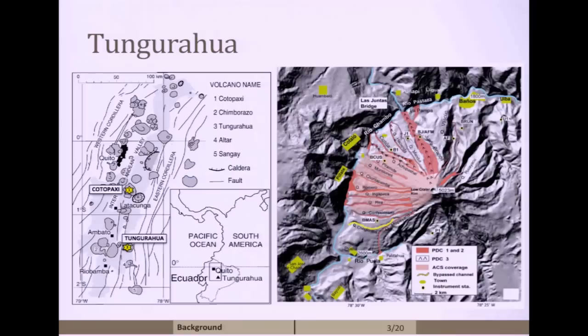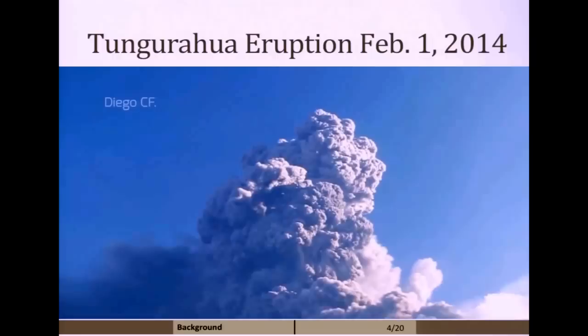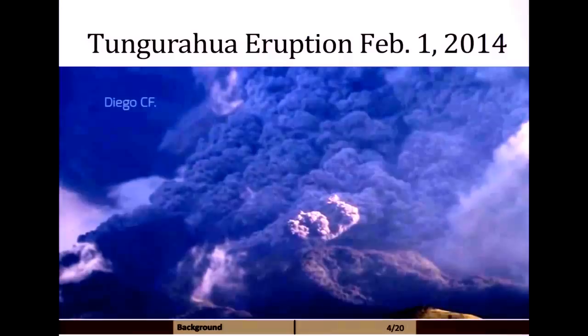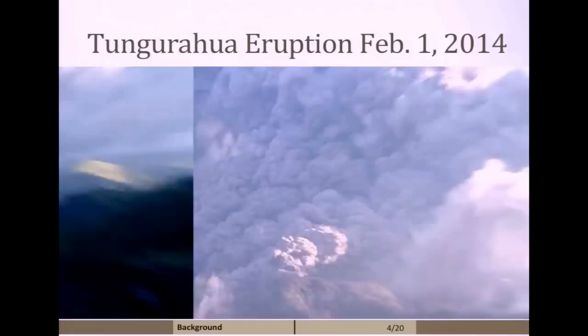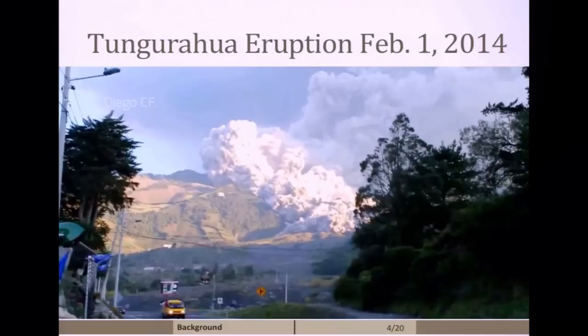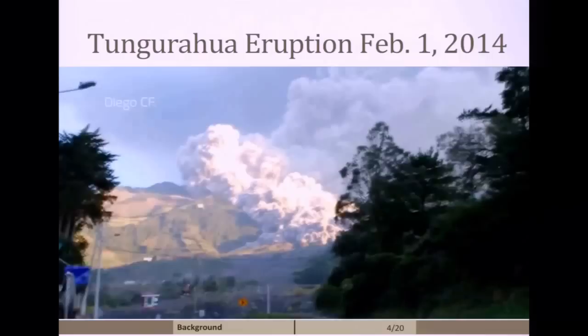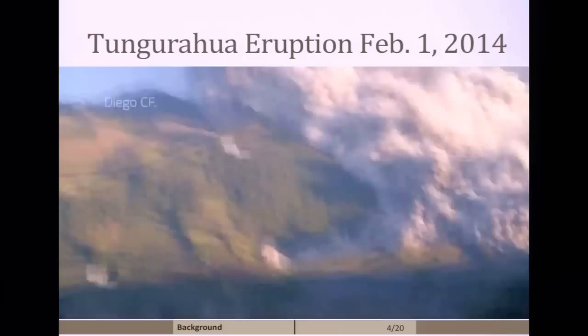To give you an example of what these eruptions look like: these are actually the density currents that I'm talking about. They travel down the flank of these volcanoes fairly efficiently. You can see in the back, basically, we have a buoyant portion of the column behind and then the flows propagating, entraining ambient air, those Kelvin-Helmholtz instabilities. We also have some lobe and cleft instabilities.